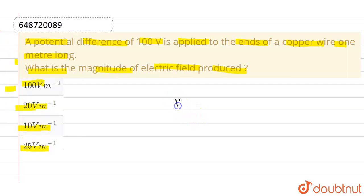Now we are given a potential difference of 100 volts. We are also given the length of wire, which is one meter. As we know, electric field is given by potential divided by length.